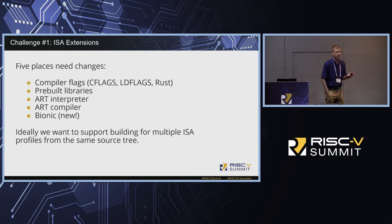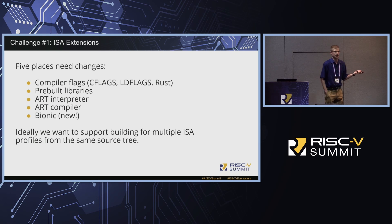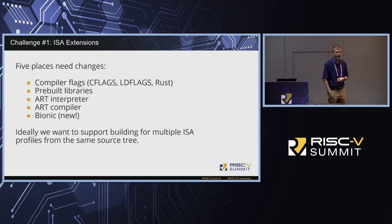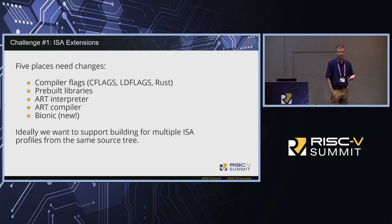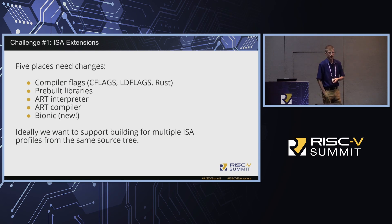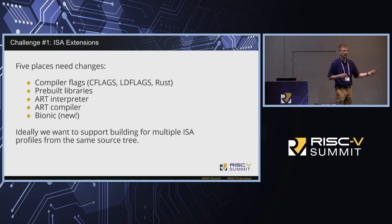I'm going to go through four challenges we overcame when porting Android to our platforms. The first is the ISA extension requirement. If you want to build AOSP for a device that doesn't support all the ISA extensions Google expects in the Android ABI, you need to change several places throughout the source code: the compiler flags used to build native code, the pre-built libraries, some system libraries like Bionic — which recently switched to vector-optimized string and memory operations — and the ART compiler interpreter. Ideally, we want to support various sets of ISA extensions from the same source tree, turning those optimizations on and off conditionally.